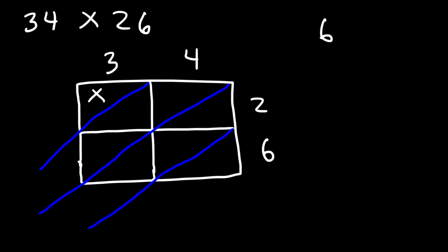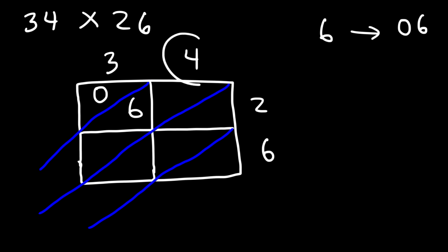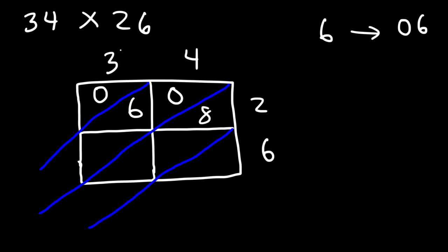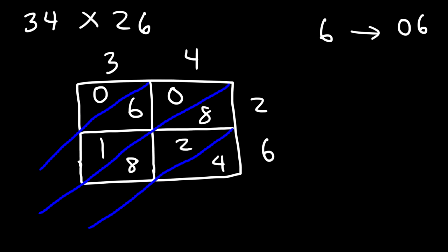First, multiply 3 by 2 — that's 6. In each cell you have a place above and below the diagonal, so you write it as 0 and 6. Then 4 times 2 is 8, written as 0 and 8. Now 3 times 6 is 18, so we write 1 and 8. Finally, 4 times 6 is 24, written as 2 and 4.